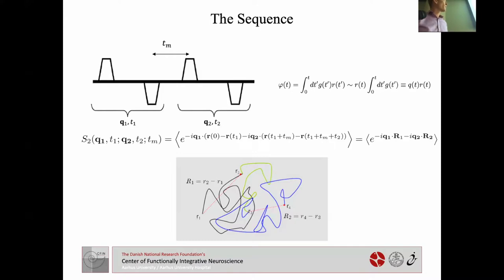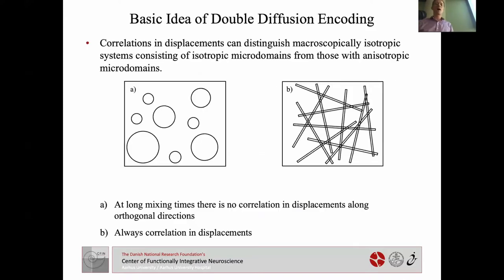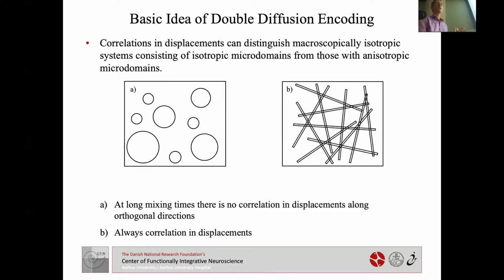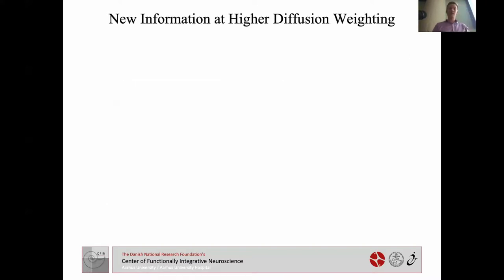We diffuse for a while — encoded by the first block — then have a mixing time, and the last diffusion encoding block encodes the last part of the trajectory. Why is this useful for microstructure? It can distinguish two systems that both look isotropic when you vary the diffusion direction. With double diffusion encoding, only the system with microscopic anisotropy will depend on the relative diffusion wave vector between the two encoding blocks.